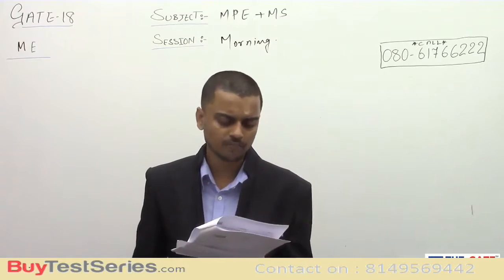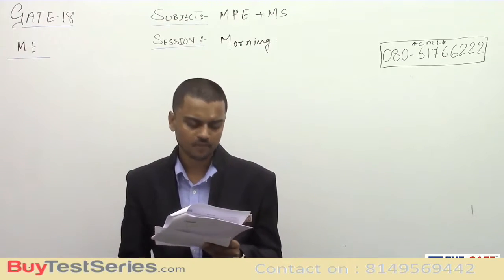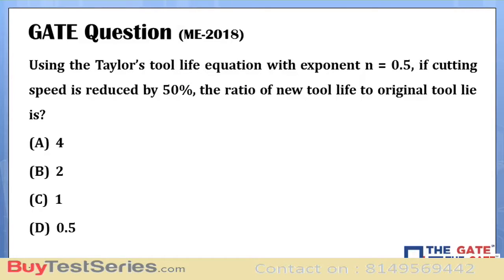Now we'll discuss question number two from Taylor's tool life equation. The question is: using the Taylor's tool life equation with exponent n equal to 0.5, if the cutting speed is reduced by 50%, the